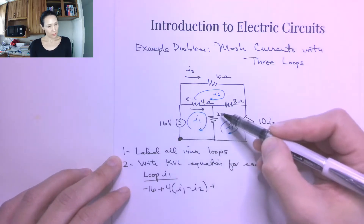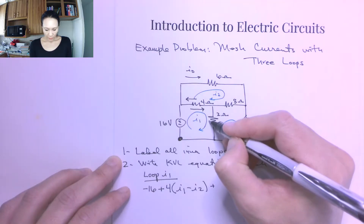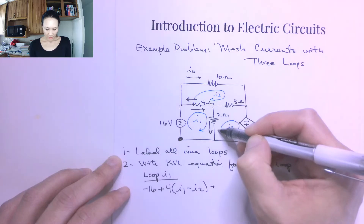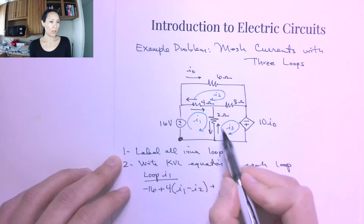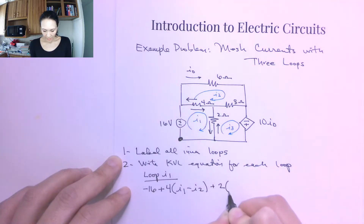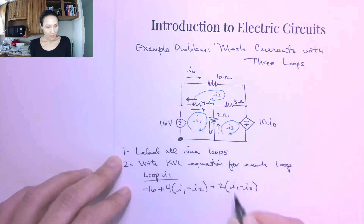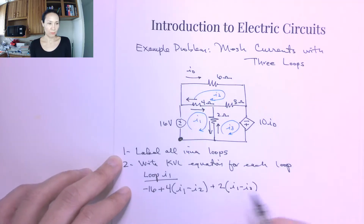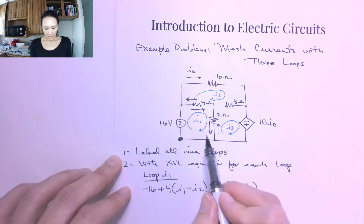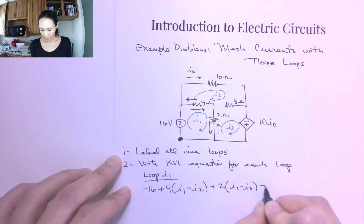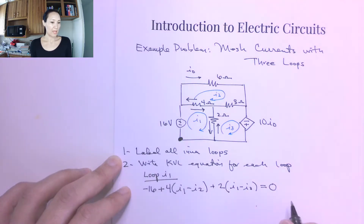Continuing around the loop, the next thing I encounter is the 2 ohm resistor. I1 and I3 are going in opposite directions, so they mesh at the 2 ohm resistor. In my equation that looks like 2 times the quantity I1 minus I3, because I'm currently doing I1, so that's my positive one. I continue around the I1 loop until I reach the start point and complete my equation with equal to zero by KVL.